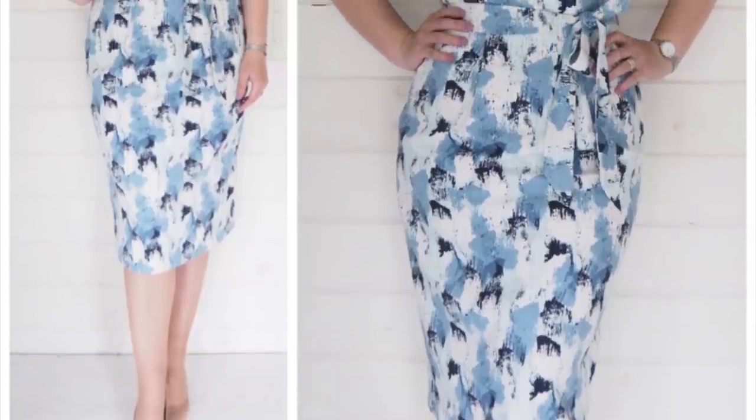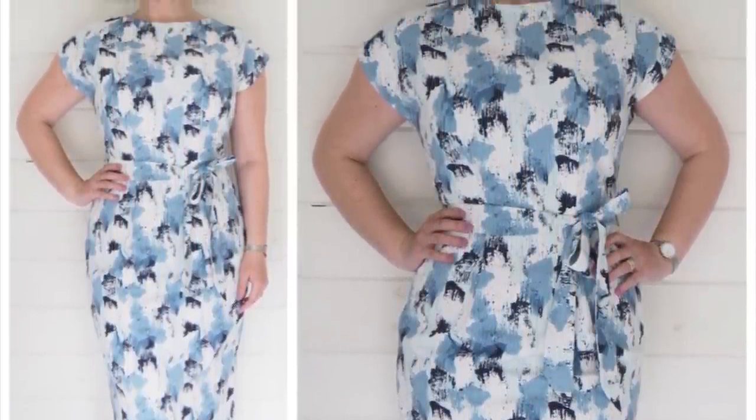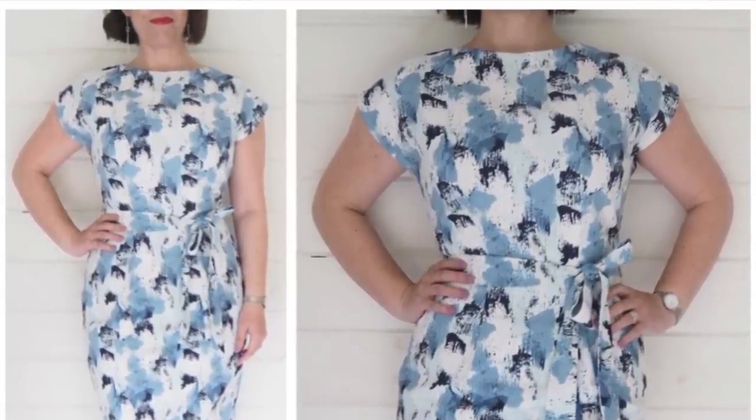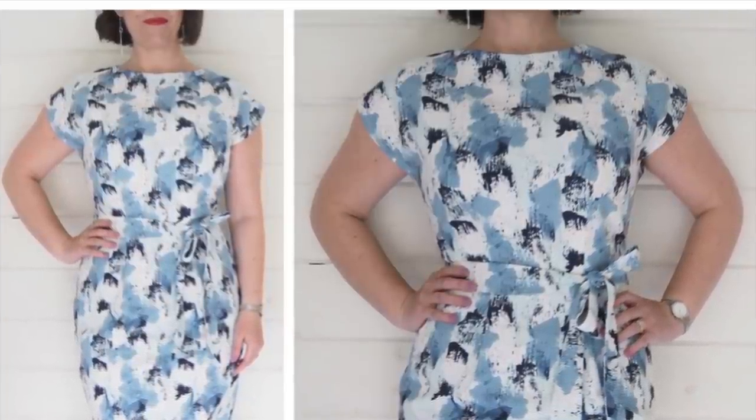So for my second example, the starting point here was the cap sleeve kimono block. Again, it's had exactly the same treatment in terms of repositioning the shoulder dart to the side seam. It has that same waist dart, but a very different look.